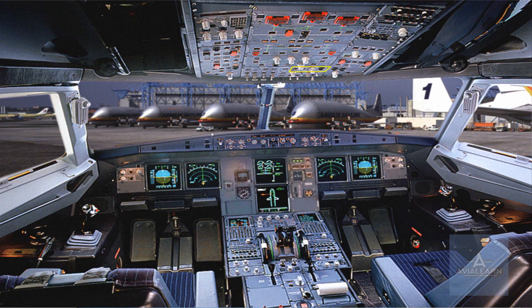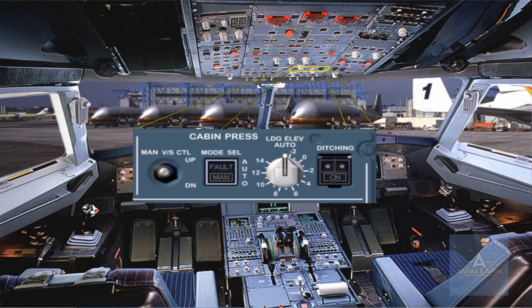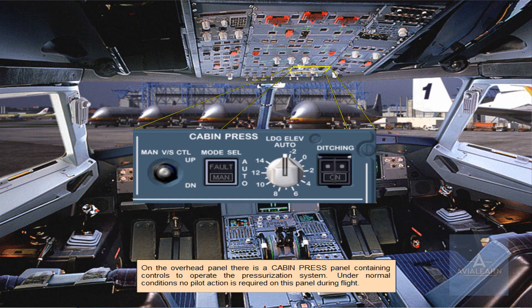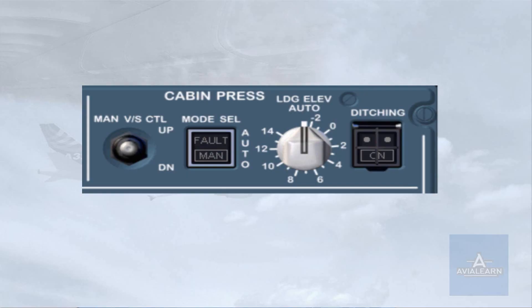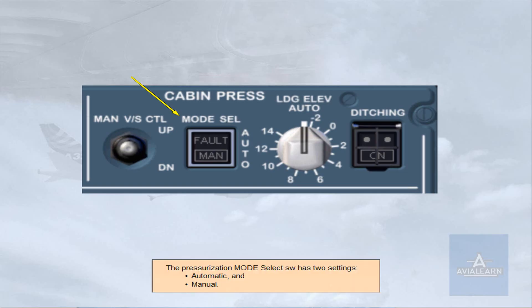On the overhead panel, there is a cabin pressure panel containing controls to operate the pressurization system. Under normal conditions, no pilot action is required on this panel during flight. The pressurization mode select switch has two settings: automatic and manual.